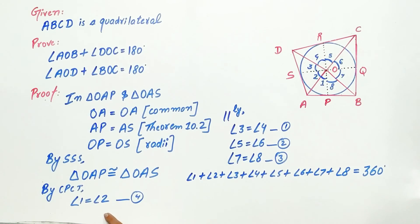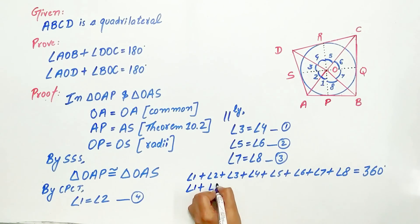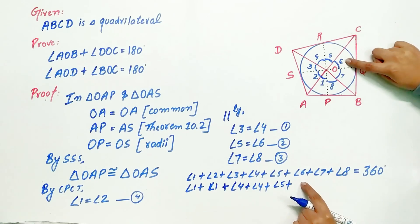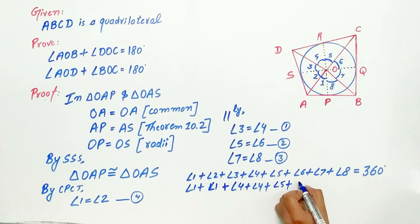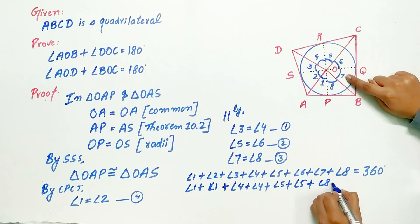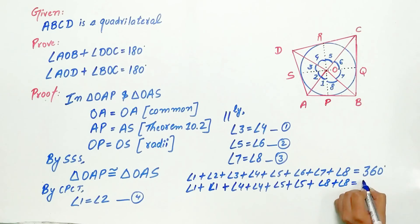Now substituting the equal angles: angle 1 equals angle 2 by equation 1, angle 3 equals angle 4, angle 5 equals angle 6, and angle 7 equals angle 8 via equation 3.